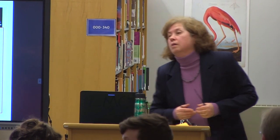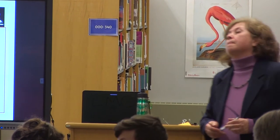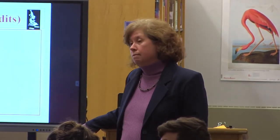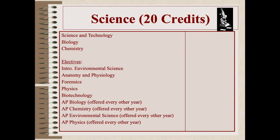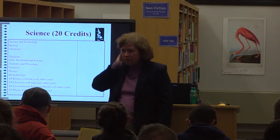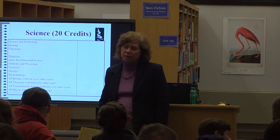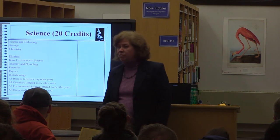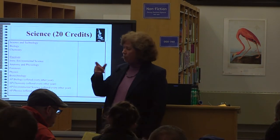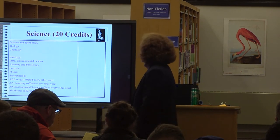For other core subjects: you can't finish English requirements early — one is required every year. Same for social studies. Math requires at least one every year, two in sophomore year. Science is the one core department where students sometimes finish their minimum — four courses — by the end of junior year, and choose not to take more. But students interested in medicine, engineering, or the sciences will double up and take electives beyond the minimum.